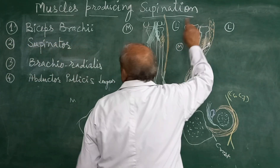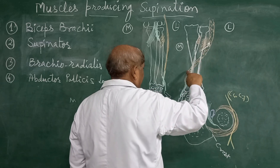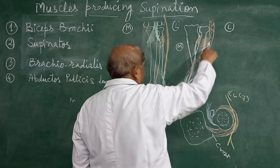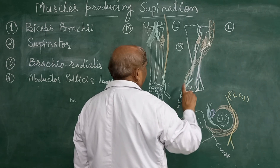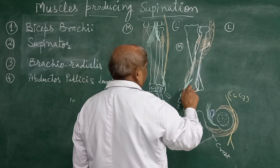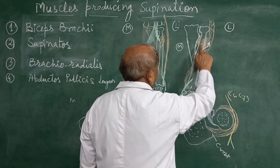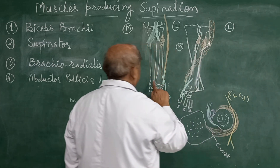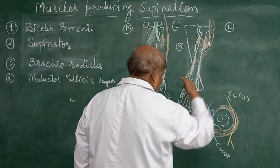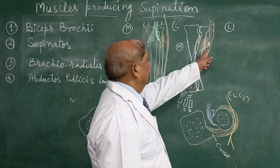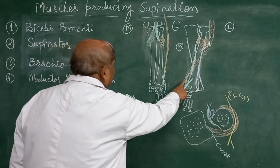The brachioradialis takes origin from the lateral supracondylar ridge of the humerus. In the pronated position, the muscle is crossing from lateral towards the medial side, attaching to the styloid process of the radius more medially. When this muscle contracts, it will pull the lower end of the radius to rotate in the superior and inferior radioulnar joint, bringing the lower end of the radius towards the lateral side of the lower end of the ulna. The lower end makes a circle of 180 degrees to achieve supine position, assisted by the powerful biceps and supinator.